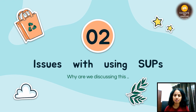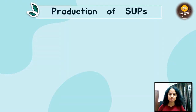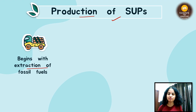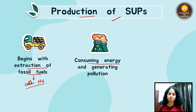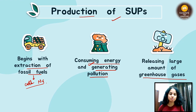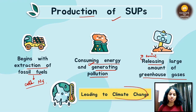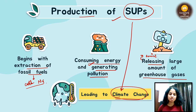What is the issue with single-use plastic? What is the problem? It starts from the production process. First of all, we need the extraction of fossil fuels — coal, natural gas — and this extraction process consumes very large amounts of energy and generates a lot of pollution. In this process, greenhouse gases are released and emitted. Greenhouse gases are a very big cause of climate change, and because we produce so much plastic, this becomes a very big problem.